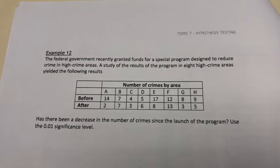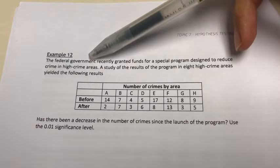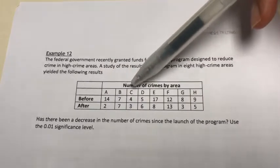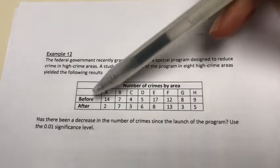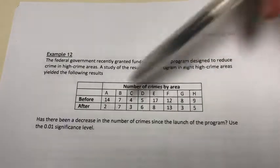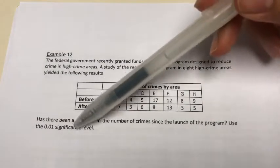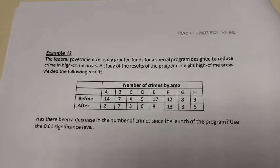Let's try this example. The federal government recently granted funds for a special program designed to reduce crime in high-crime areas. A study of the results of the program in eight high-crime areas yielded the following results — showing the number of crimes before and after the program. The question is: has there been a decrease in the number of crimes since the launch of the program? Use the 1% significance level.